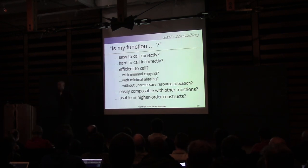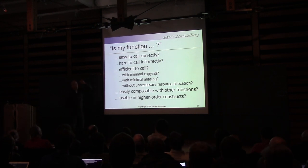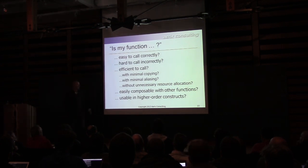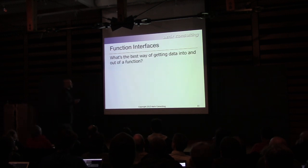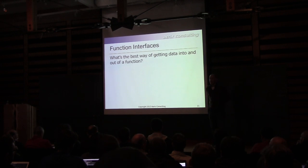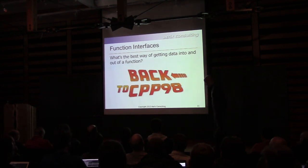When you write a function, whether C++98 or C++11, these are some things you might want to think about when writing a function intended to be reused — which is every function. Is it easy to call correctly? Hard to call incorrectly? Efficient to call with minimal copying and aliasing without unnecessary resource allocation? Is it easily composable with other functions and usable in higher-order constructs? These are the kinds of things to think about when writing reusable functions.